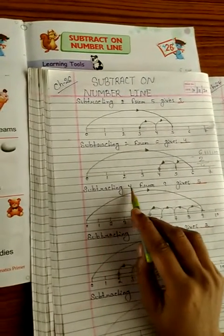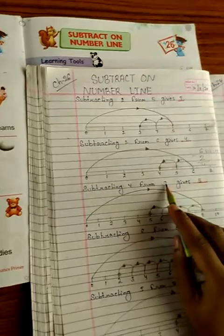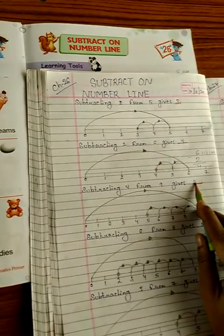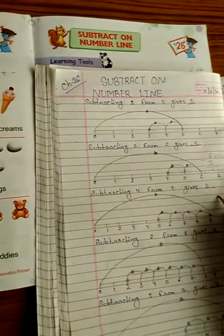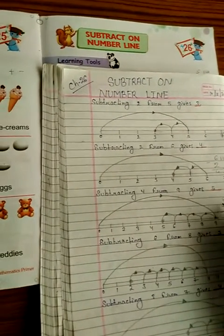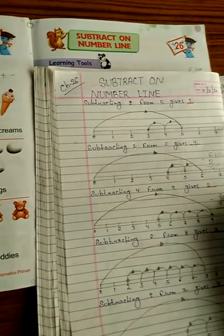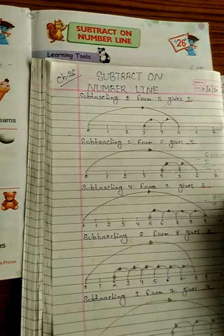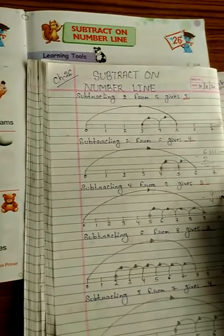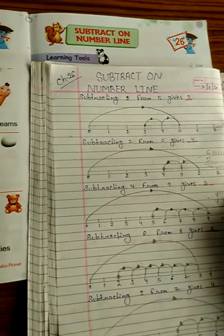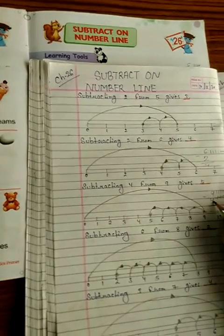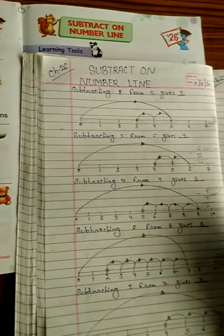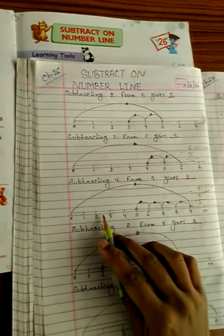Next question: subtracting 4 from 9 gives 5. If we do 9 minus 4, the answer will be 5. So first, draw 9 lines: 1, 2, 3, 4, 5, 6, 7, 8, 9. Then cancel 4 lines: 1, 2, 3, 4. Left ones: 1, 2, 3, 4, 5. So 5 lines left. Now here we will also draw the number line.